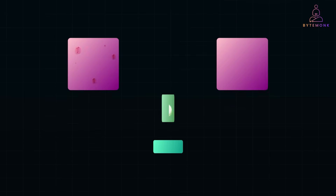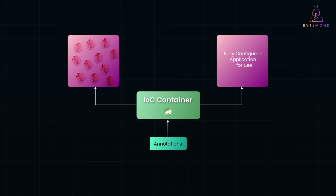In the old days, you had to create objects yourself by calling 'new MyClass' and then pass them around to different parts of your code. Inversion of Control flips that responsibility. Instead of your code controlling the flow, Spring's container does it. You basically say: hey Spring, I'll give you all the info about my classes and how they relate to each other — you figure out how to create them and when to plug them in. That's the inversion. Your application is now letting Spring orchestrate how everything is built and connected.